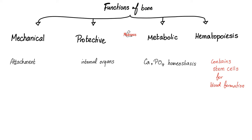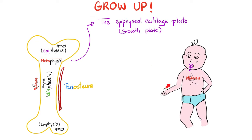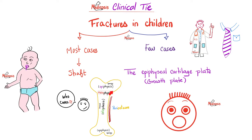Functions of bones are numerous. They protect, they provide support, they provide calcium and phosphate balance, as well as making new blood cells thanks to bone marrow stem cells. When you're growing up, you need cartilage to die and you will build bone on top of that cartilage — we call this endochondral ossification. If a fracture affects the growth cartilage plate or epiphyseal cartilage plate in children, this could be a disaster and lead to limb discrepancy.